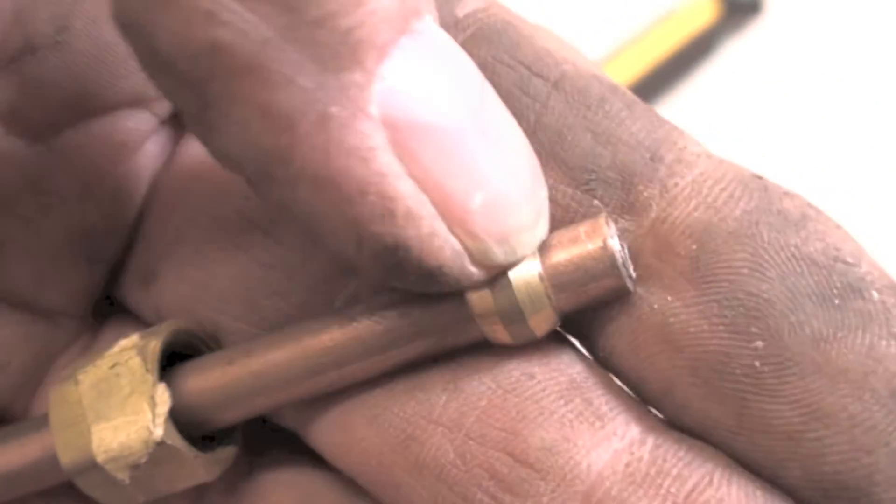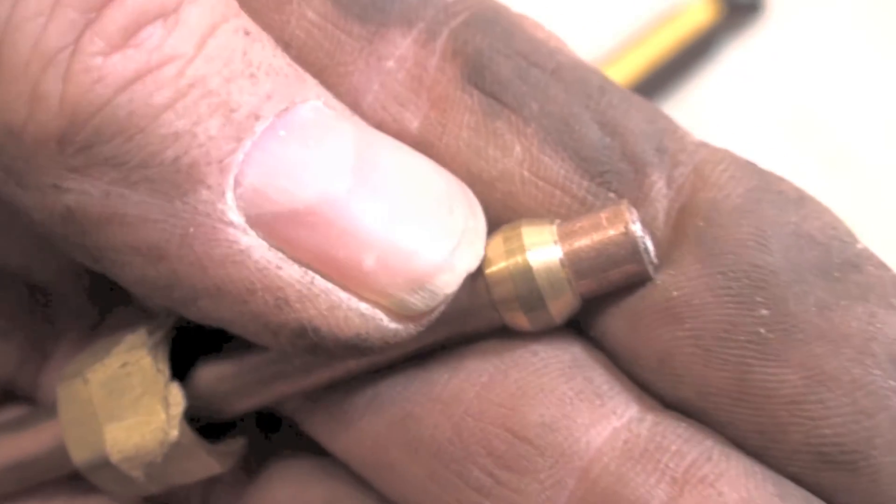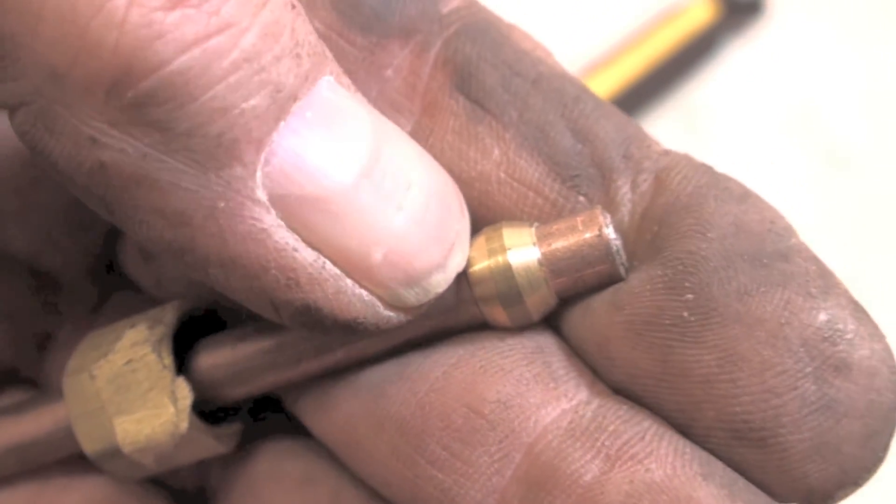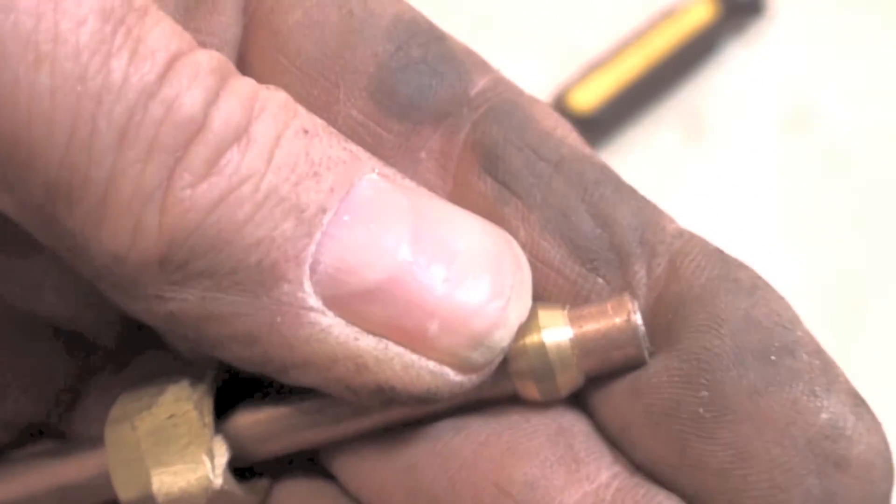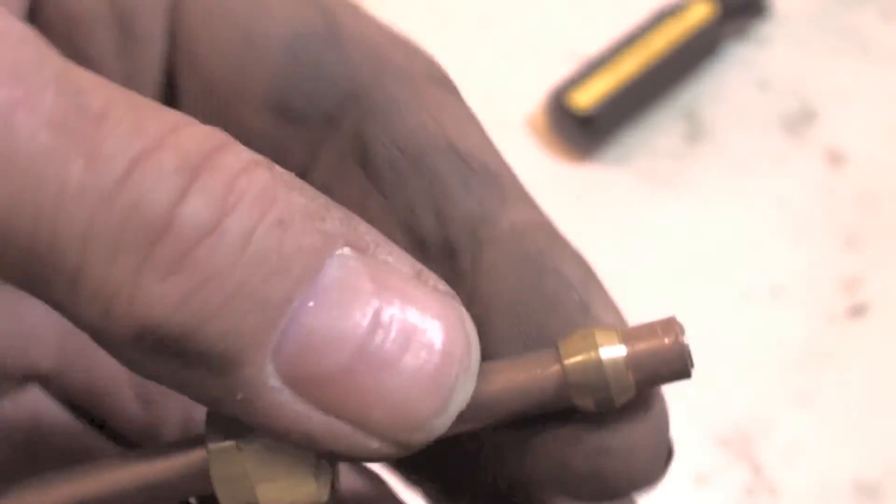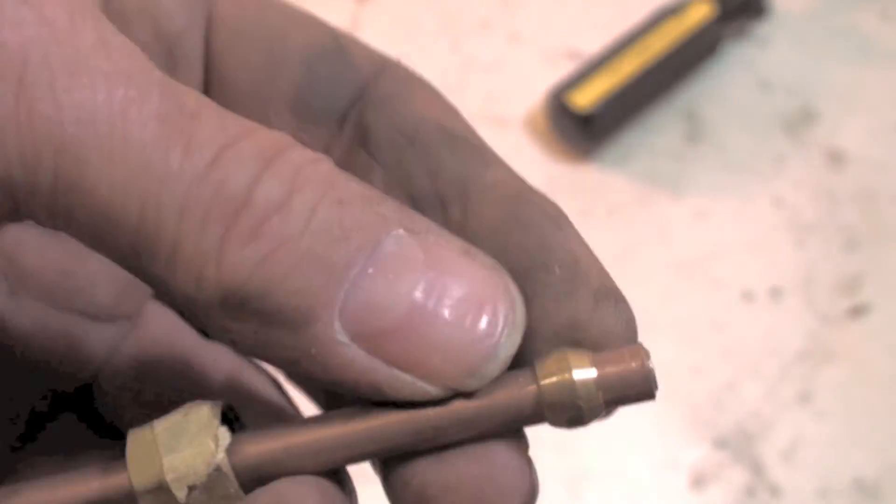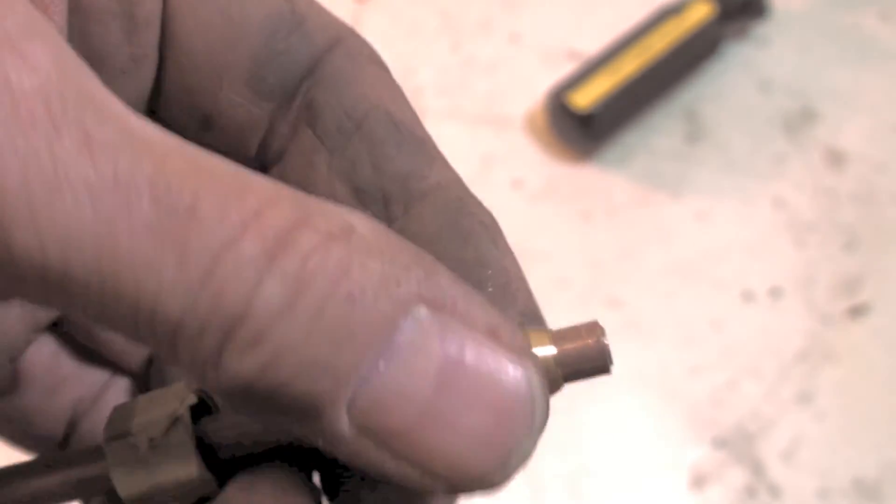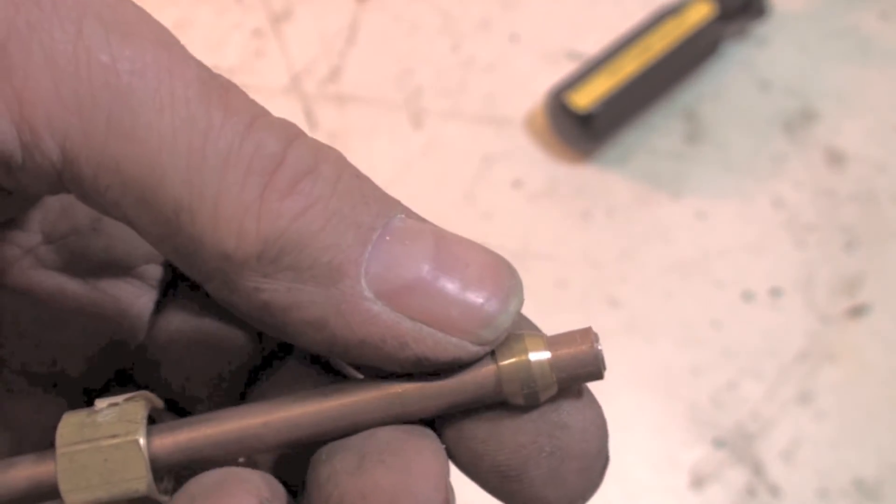You can see it's been squished down right there, and that should seal pretty good. If you have trouble getting this thing to seal, especially with natural gas, a little bit of pipe dope on this thing will not hurt anything. Don't get any on the tubing, but a little bit of pipe dope will seal it.